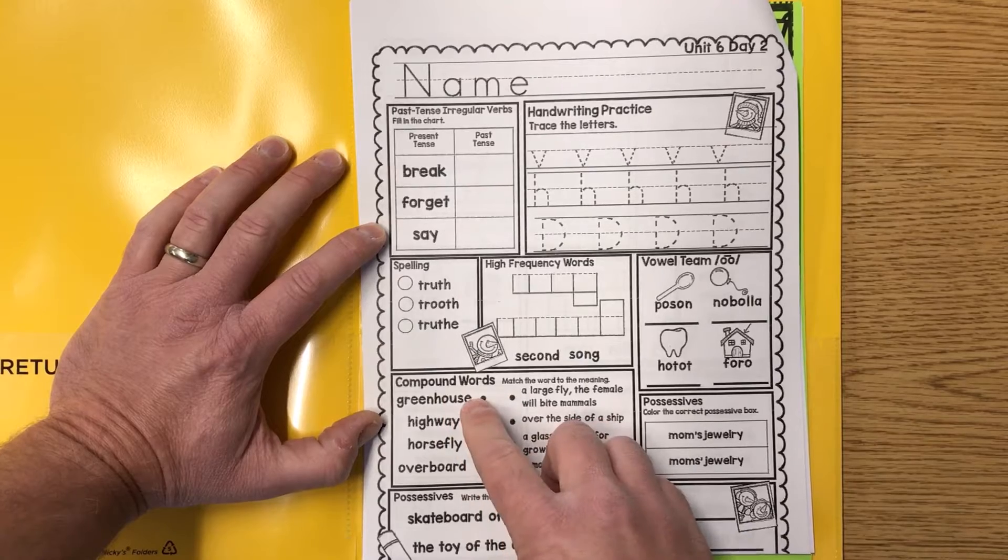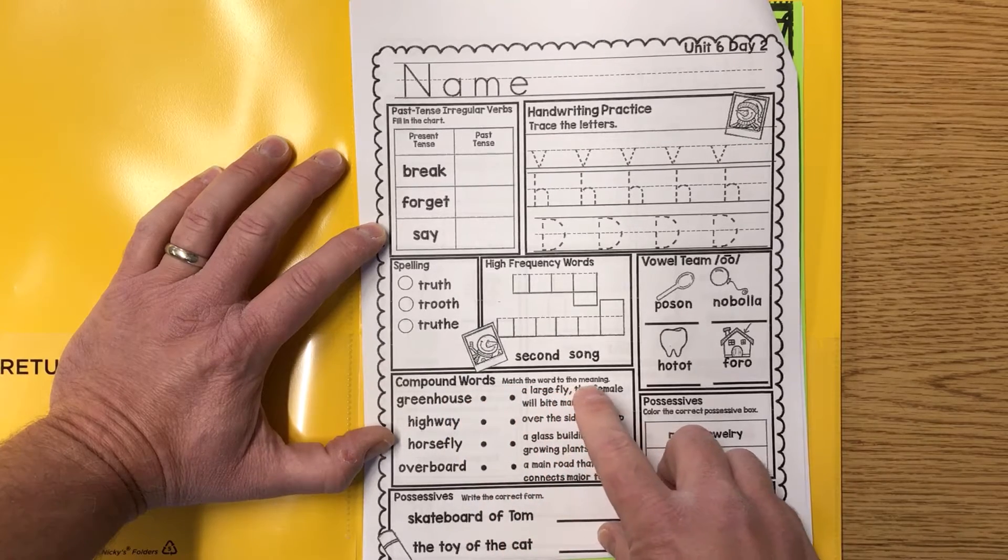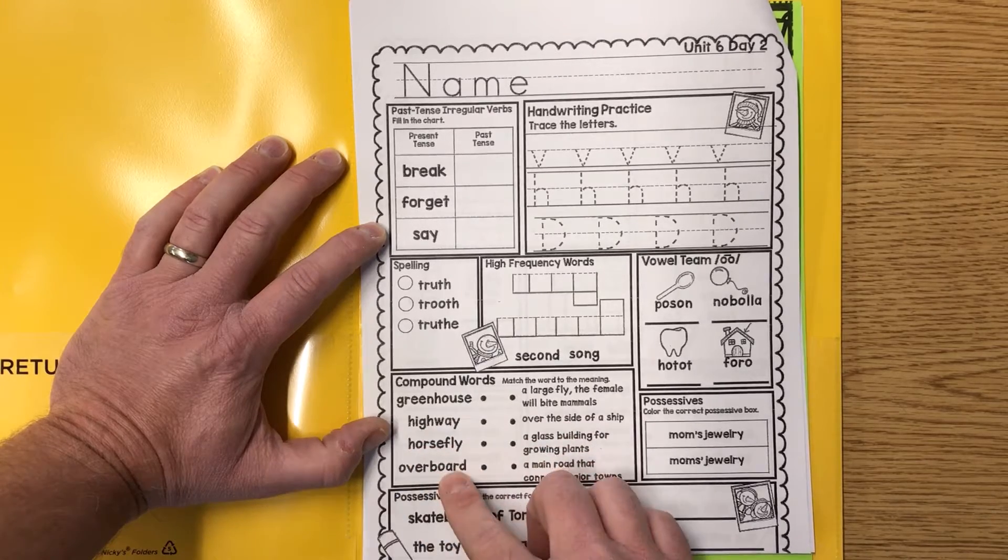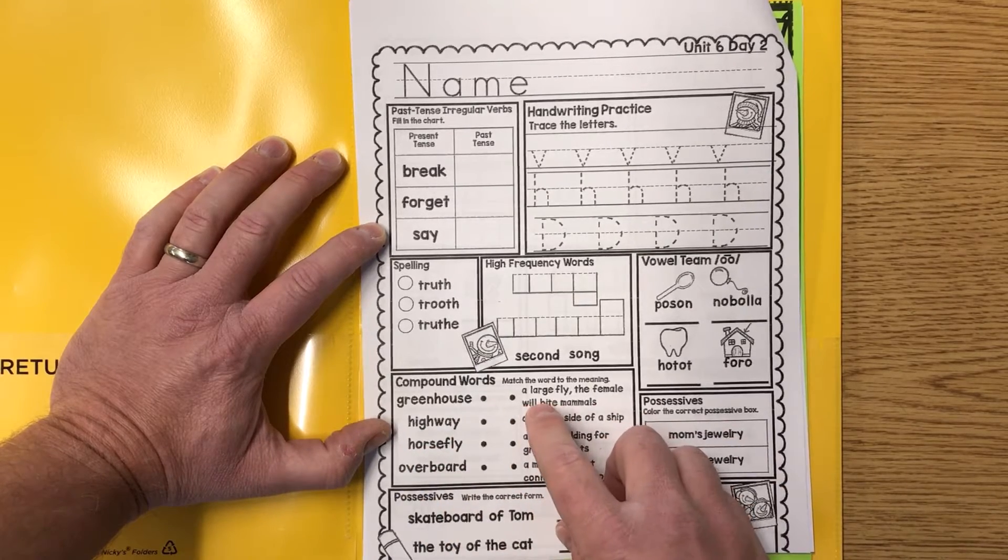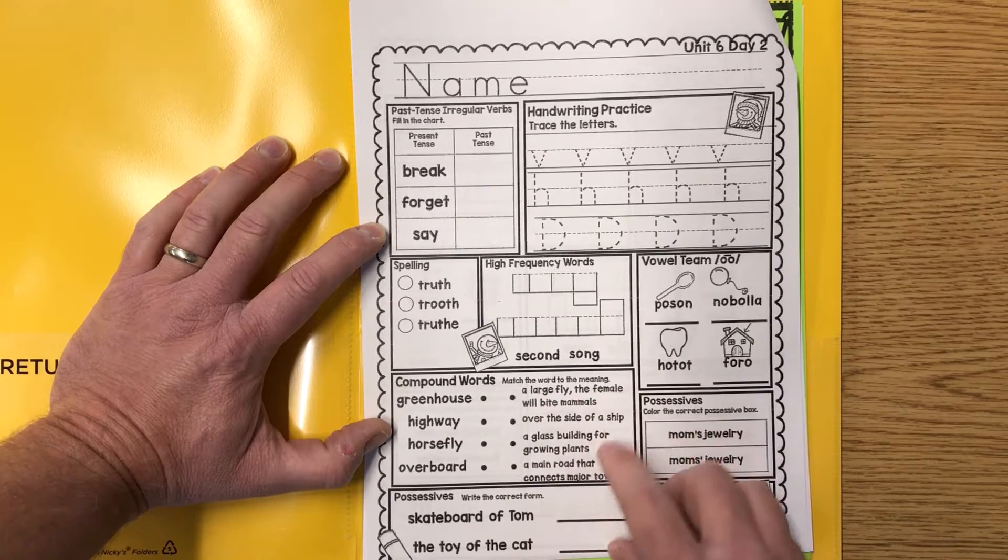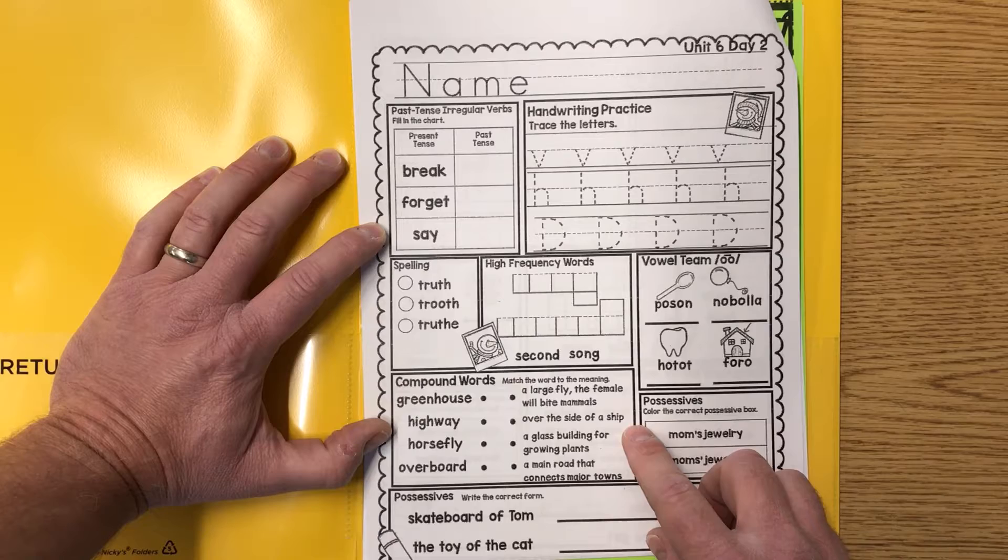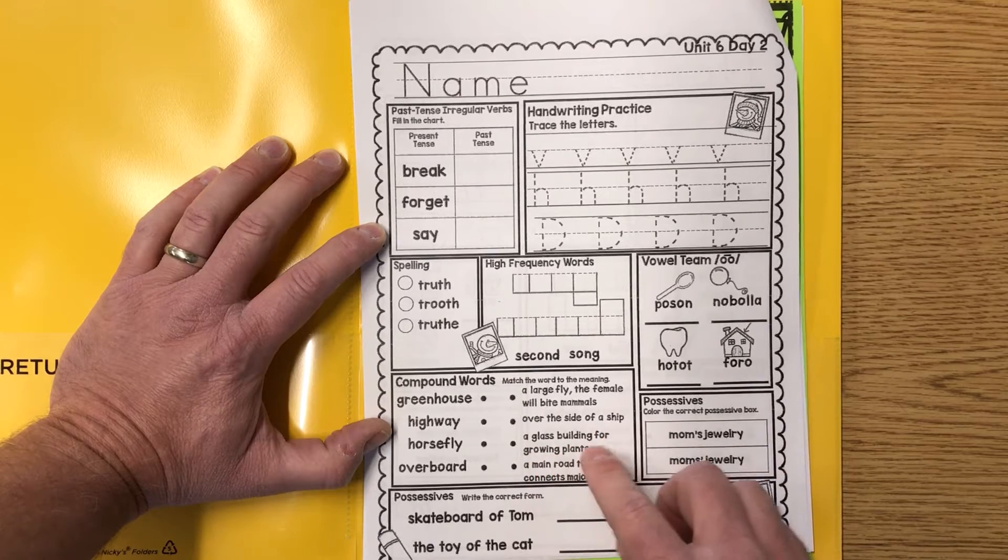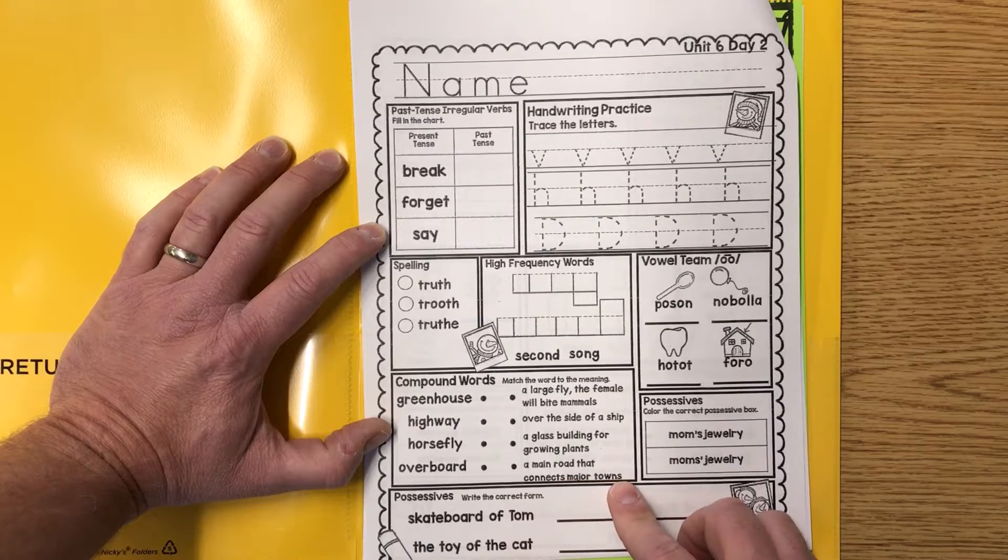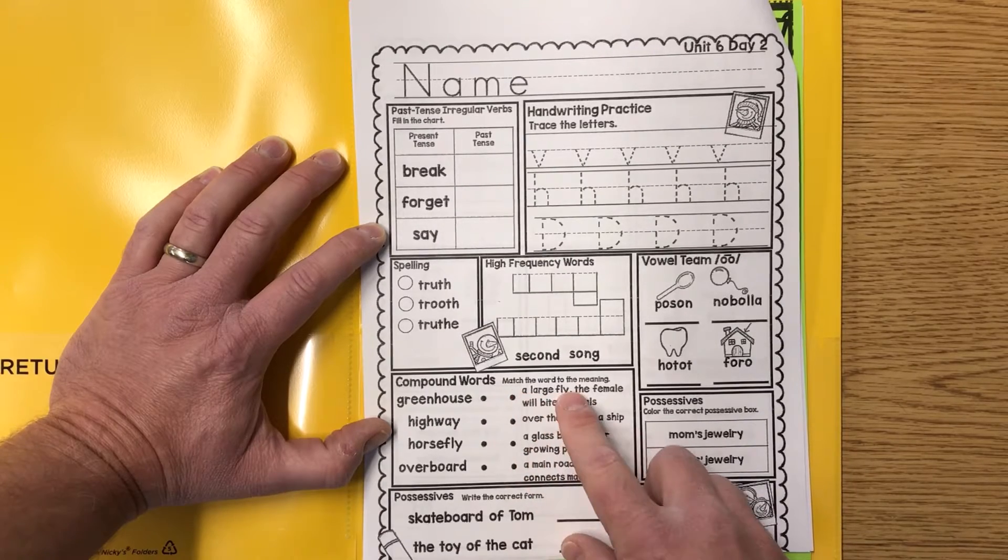Compound words. Match the word to the meaning. So we got greenhouse, highway, horse fly, overboard. Let's look at some of these. A large fly, the female will bite animals. Over the side of a ship. A glass building for growing plants. A main road that connects major towns. Go ahead and match the word to the meaning.